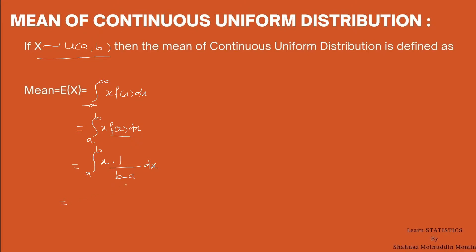Since 1/(b minus a) is a constant, we can take this quantity outside the integration sign, giving us 1/(b minus a) times the integral from a to b of x dx.